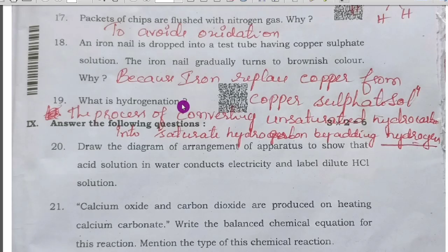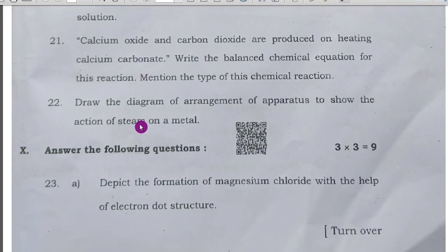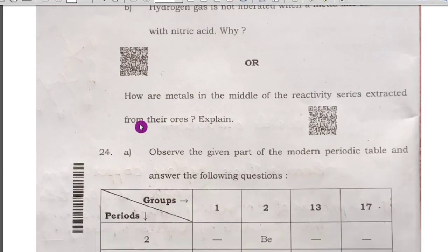Next, what is hydrogenation? That means by adding hydrogen, the process of converting unsaturated hydrocarbon to saturated hydrocarbons by adding hydrogen. That is only hydrogenation. This is all the questions.